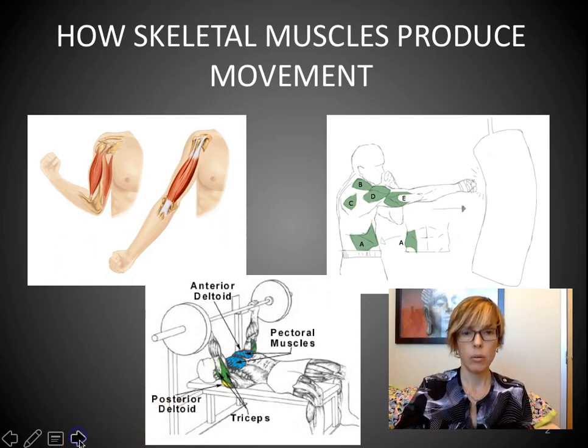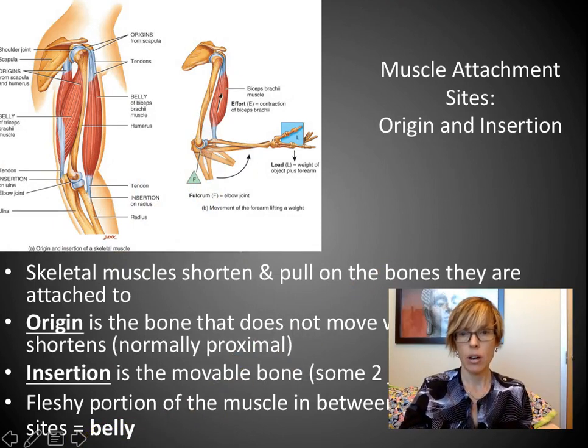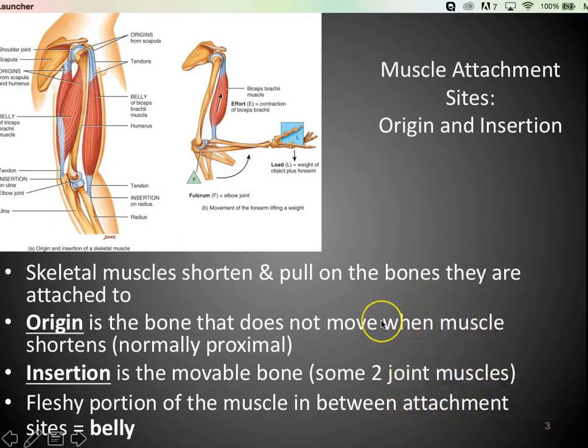Let's talk more about how muscles actually function. Something you'll also see in lab is origins and insertions of muscles. This is really important because as you go into your allied health field and deal with different injuries, it's important to know: if I have an injury in this area, what muscles might be affected — not because they're directly impacted, but their origins or insertions might be.